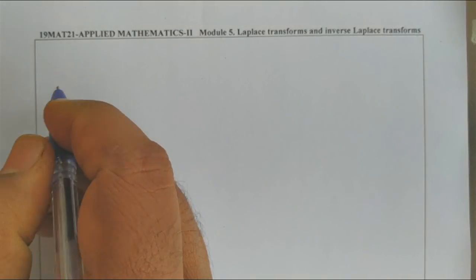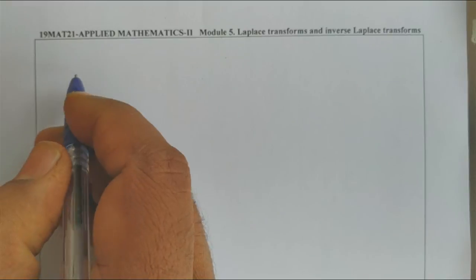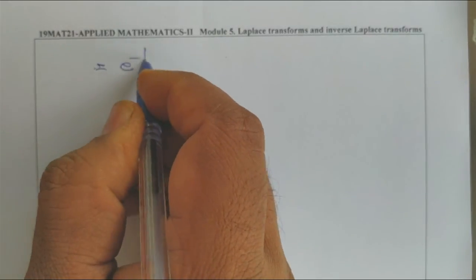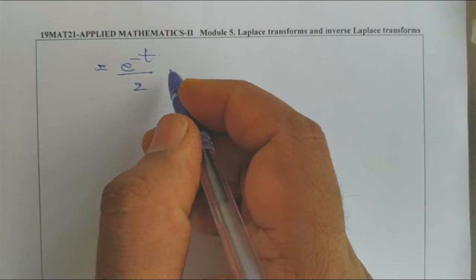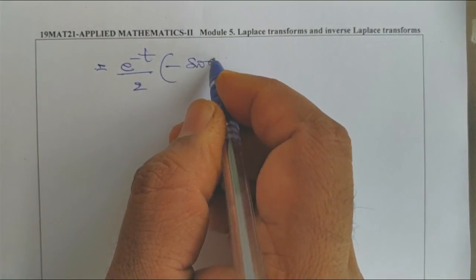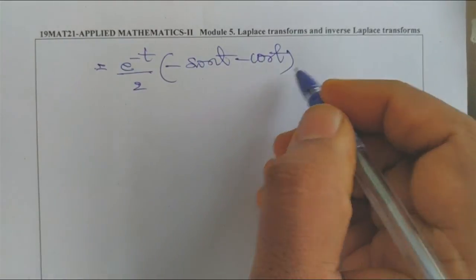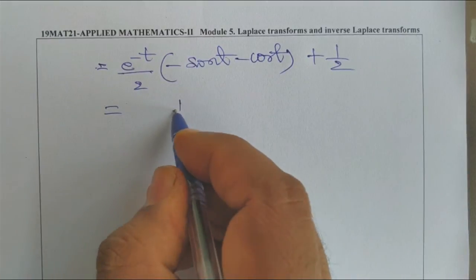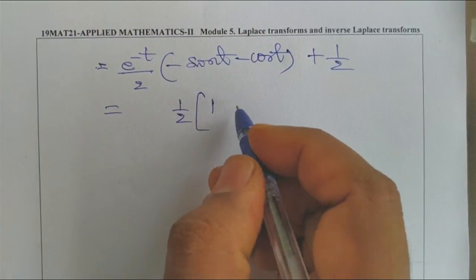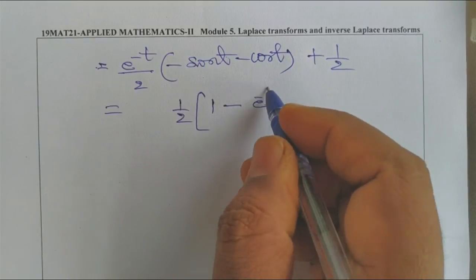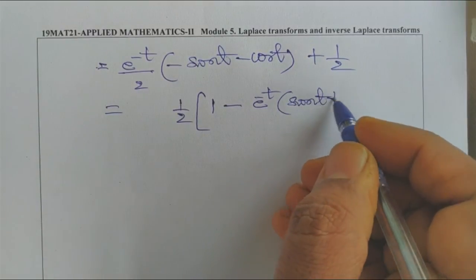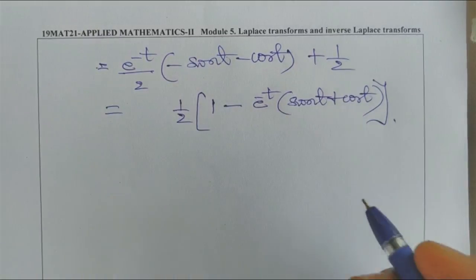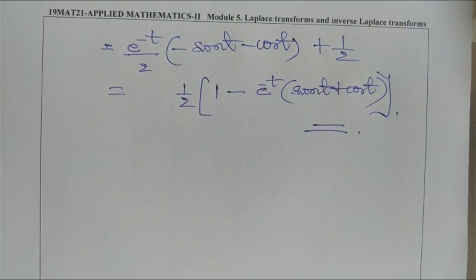Simplifying with LCM of 2: the final answer is ½[1 − e^(−t)(sin t + cos t)]. This is the solution to finding the inverse Laplace transform of 1/[S(S² + 2S + 2)] using the convolution theorem. Thank you.